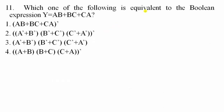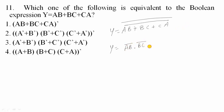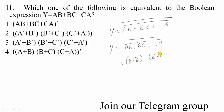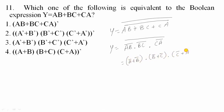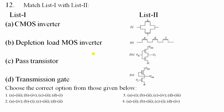Question 11: Which statement is equivalent to the Boolean expression Y = AB + BC + CA? Taking the double complement and applying De Morgan's law: the complement of (AB̄ · BC̄ · CĀ) expands to (Ā + B̄)·(B̄ + C̄)·(C̄ + Ā), complemented. This simplifies to match option 2, so option 2 is correct.